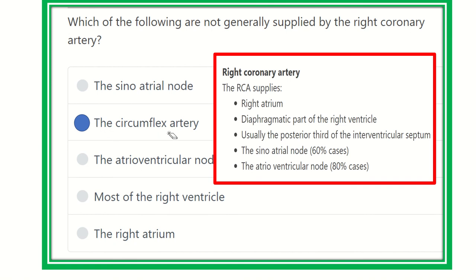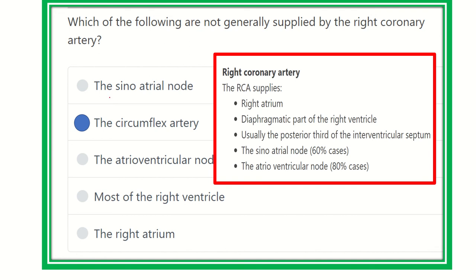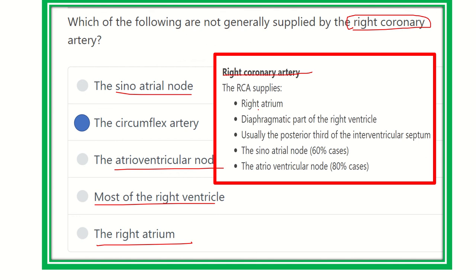The circumflex artery is a direct branch of the left coronary artery, so it is not supplied by the right coronary artery. The other options — sinoatrial node, atrioventricular node, most of the right ventricle, and the right atrium — are all supplied by the right coronary artery. Note that the left coronary artery also supplies the SA node (40%) and AV node (20%). Therefore, our final answer is the circumflex artery, which is not a branch of the right coronary artery. Thank you.